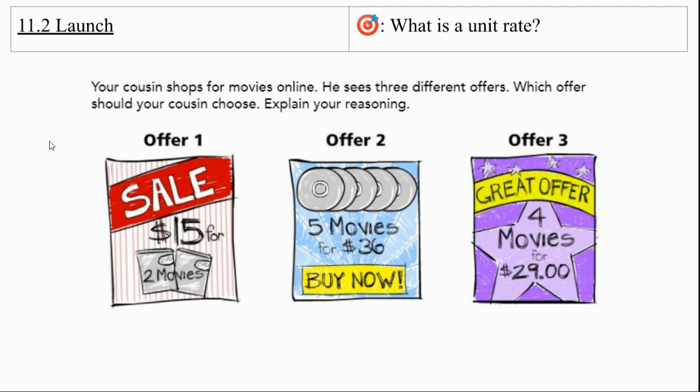We're really focusing today on that vocabulary of a unit price. Your cousin shops for movies online. He sees three different offers. Which offer should your cousin choose? Explain your reasoning.